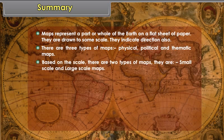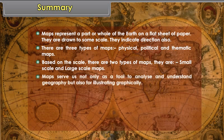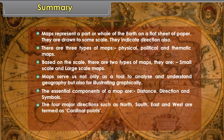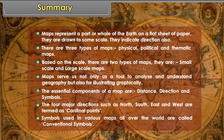Based on scale, there are two types of maps. They are small scale and large scale maps. Maps serve us not only as a tool to analyze and understand geography, but also for illustrating graphically. The essential components of a map are distance, direction and symbols. The four major directions such as north, south, east and west are termed as cardinal points. Symbols used in various maps all over the world are called conventional symbols.